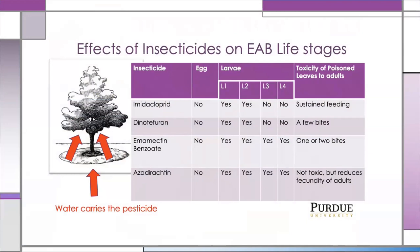There are a number of insecticides available, but our focus is going to be emamectin benzoate. None of these insecticides kill eggs. Emamectin benzoate kills all four stages of larvae, and it's highly toxic to adults that are feeding on leaves. Remember that water carries the pesticides, so if there's a drought, you have to make sure these trees get enough water to move the product from the injection sites up into the canopy through the vascular tissue, which is the source of toxin for killing larvae beneath the trunk.